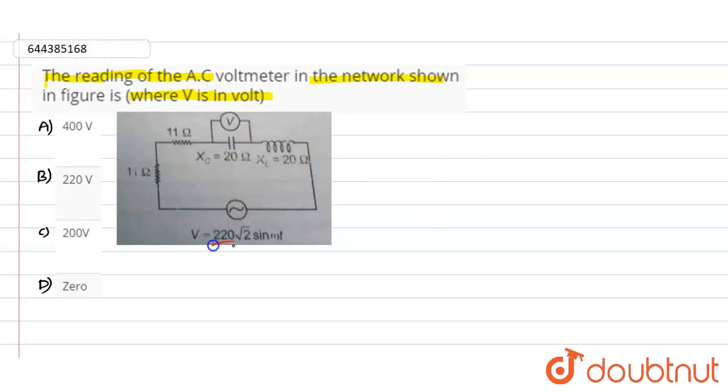This particular circuit is provided with the AC supply of 220√2 sin ωt. We have two resistors in series with the supply, they are 11 ohms of resistance each, and here we are finding the voltage across Xc or across the capacitor. So the Xc value we have as 20 ohms and XL value, that means inductor resistance value, is given as 20 ohms.